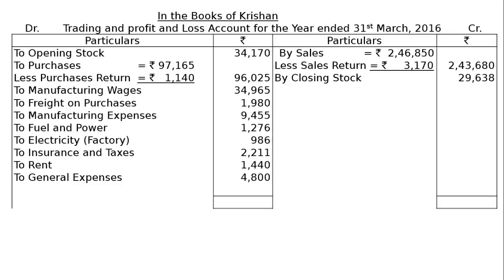The credit side has a higher value. We total that side: Rs. 2,73,318, which is taken to the debit side. We find the difference as gross profit carried down, that is Rs. 86,010. Then in the profit and loss account, by gross profit brought down Rs. 86,010.